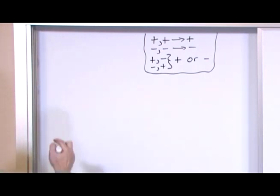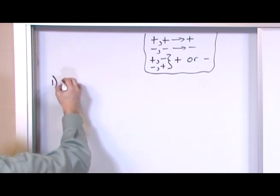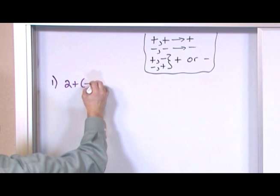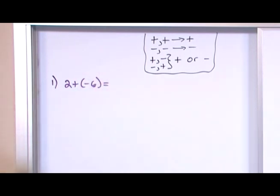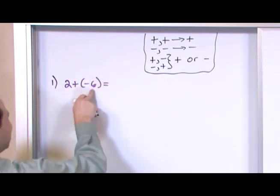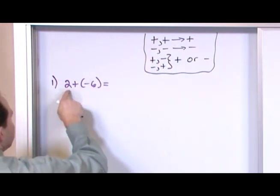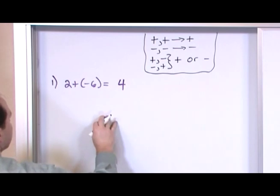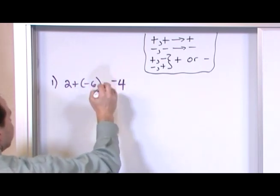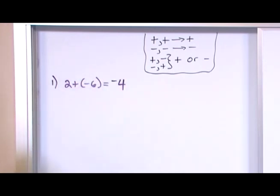Let's work some problems. So let's say we have 2 plus negative 6. I've got a positive plus a negative, which is this case, and that's the case we just did. So I subtract these numbers. 6 minus 2 gives me 4, and the negative sign is what I use because this number is the bigger absolute value-wise.